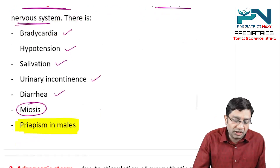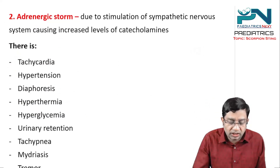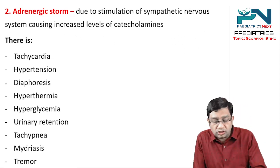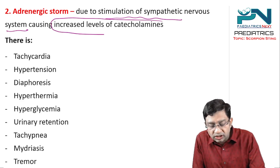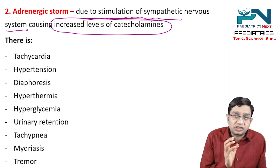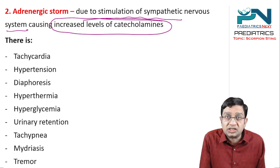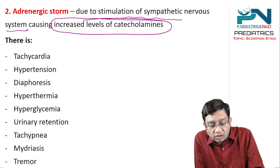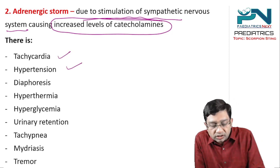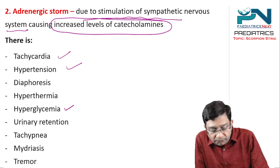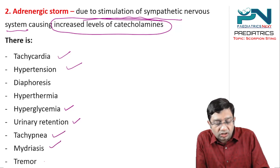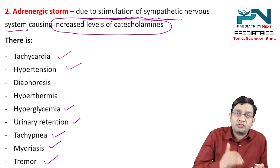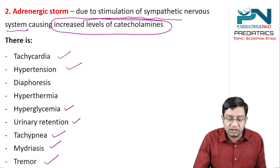This cholinergic storm is followed by the adrenergic storm. This is due to the stimulation of the sympathetic nervous system, which will lead to increased levels of catecholamines. So the heart rate will show tachycardia, hypertension, diaphoresis, hyperthermia, even hyperglycemia. This can lead to urinary retention, tachycardia, dilation of pupils (mydriasis), and tremors may be seen.